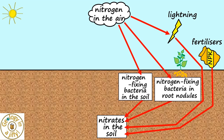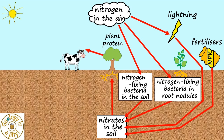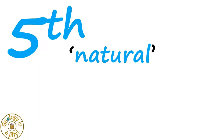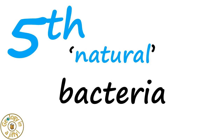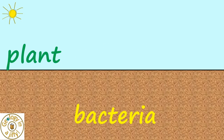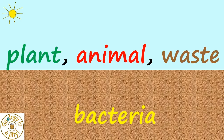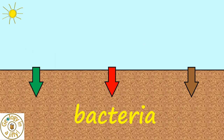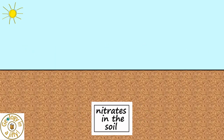Nitrates now in the soil can be absorbed by plant roots into plants, where they are used to help make proteins. The plants are then eaten by animals to help make proteins in the animal, which will ultimately make waste in the form of urine or faeces — which gives us our fifth method of getting nitrogen into the soils — another natural way using bacteria which decay dead plant material, dead animal material, and animal waste into the soil, adding to the nitrogen levels.